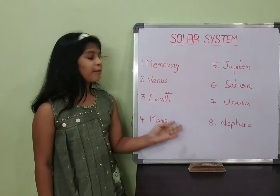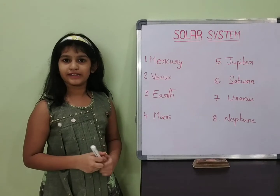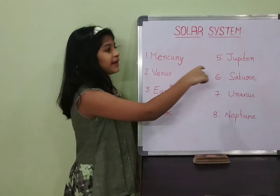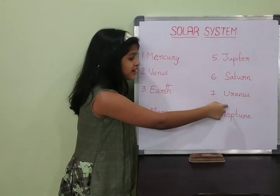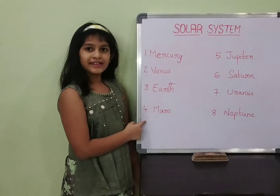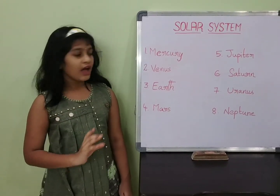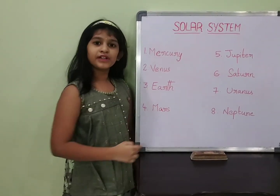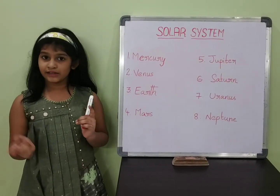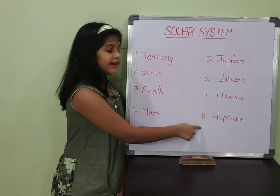These are all called planets. In the planets, there are two types: inner planets and outer planets. Inner planets are Mercury, Venus, Earth, and Mars. Outer planets are Jupiter, Saturn, Uranus, and Neptune. Inner planets do not have rings around them and they are also small. Outer planets are bigger than inner planets and have rings around them.